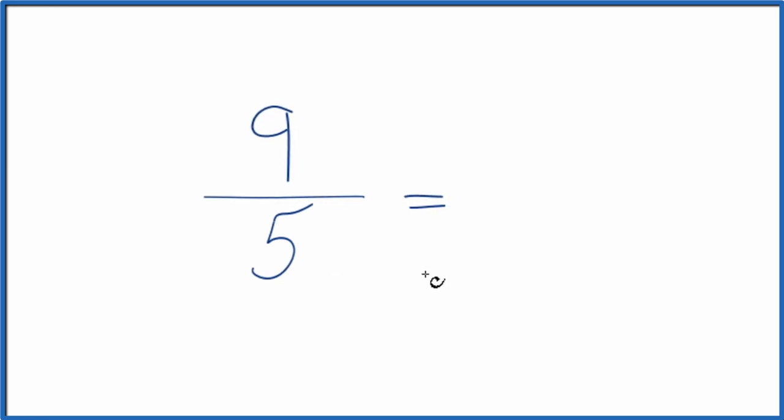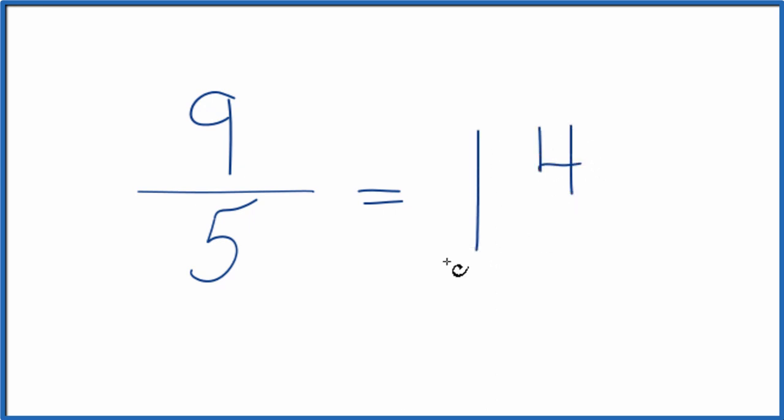We could convert it to a mixed number. Right now, it's an improper fraction. The numerator's larger than the denominator. So we divide 5 into 9. 5 goes into 9 one time with 4 left over. We bring the 5 across. 9 fifths, this improper fraction, you could write it as 1 and 4 fifths.